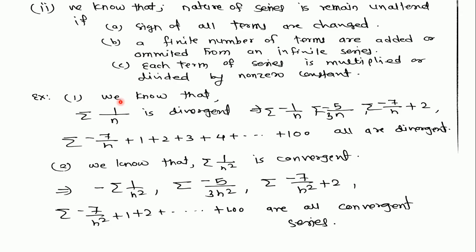For example, we know that 1/N is a divergent series — it is a P-series with P equal to 1, so P ≤ 1 and therefore divergent. If we change the sign, the series also becomes divergent. If we multiply by −5/3, it is again divergent. If we add a finite number or a finite number of terms (say terms 1 to 100), the series remains divergent. The nature of the series is unchanged in all these cases.